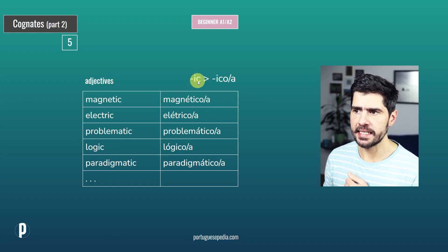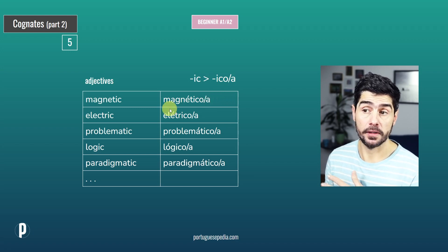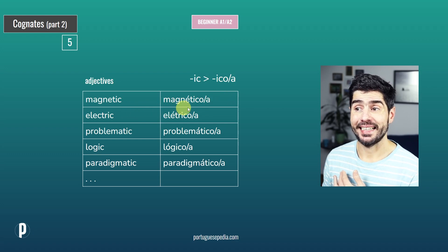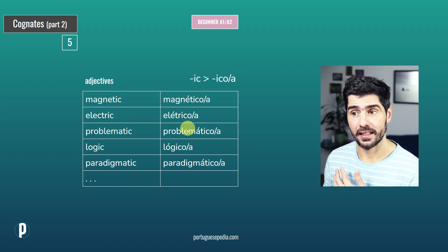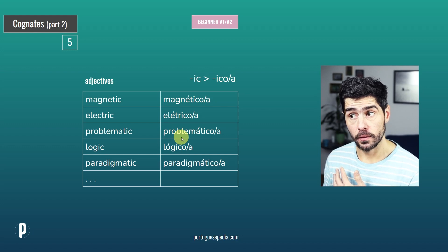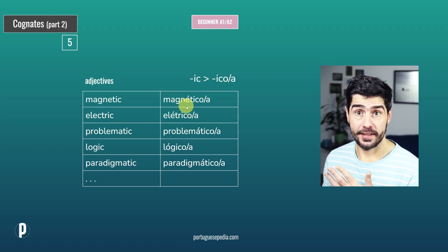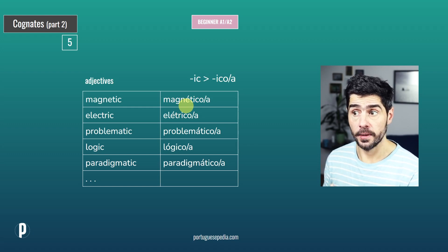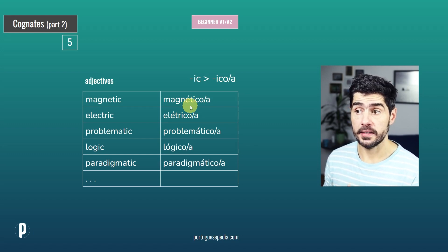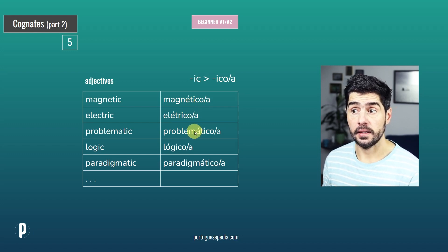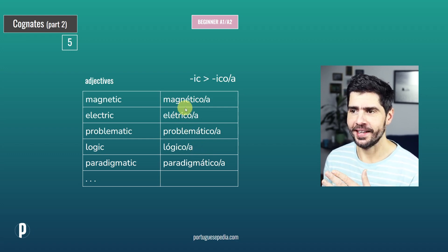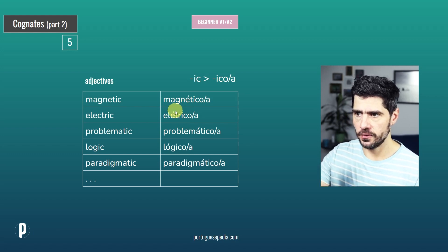Group five: we have -IC in English and -ICO or -ICA in Portuguese, depending on whether it is masculine or feminine. So magnetic — magnético/magnética. Electric — elétrico/elétrica. Problematic — problemático. The accent mark is on the third-to-last syllable, because by default we would stress the next-to-last, giving us magnético or elétrico incorrectly. The accent mark corrects that.